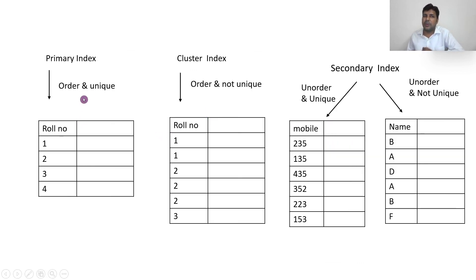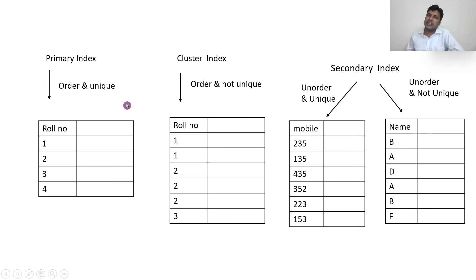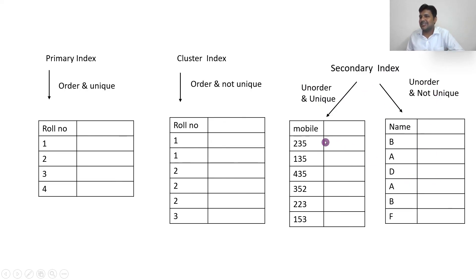To recap: primary index — ordered and unique, further divided into sparse and dense. Dense has as many index entries as records. Sparse has one index entry per group interval, like class intervals one-to-five, six-to-ten. Cluster index — ordered but not unique; values like one, two, three repeat. Secondary index — used when you have huge data, or data that is ordered or unique, or not unique; an additional level of indexing is applied.